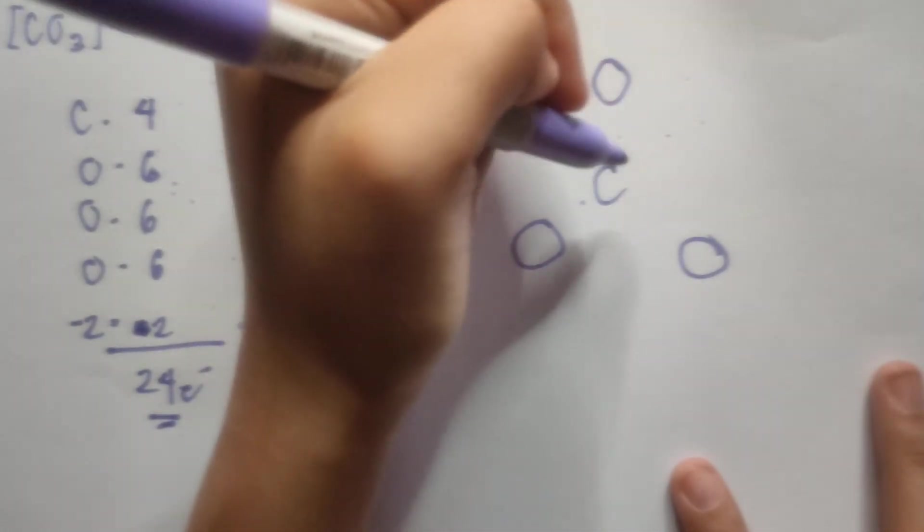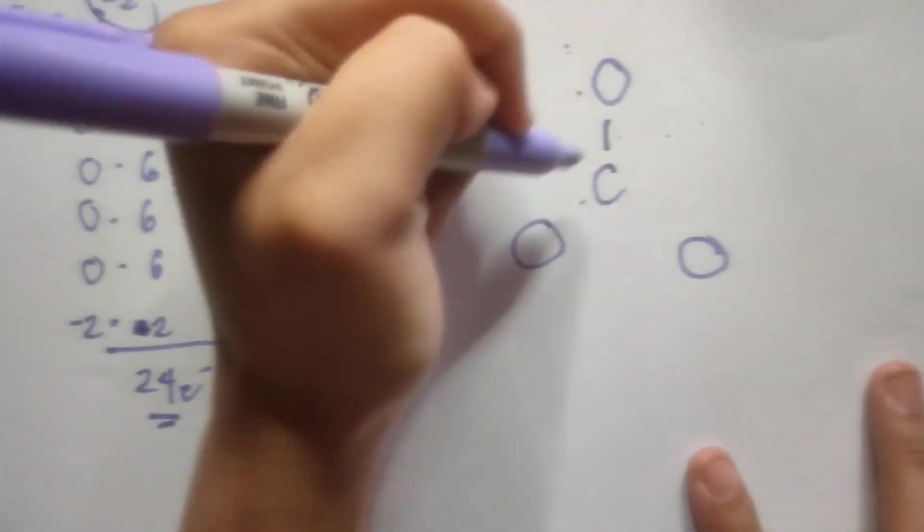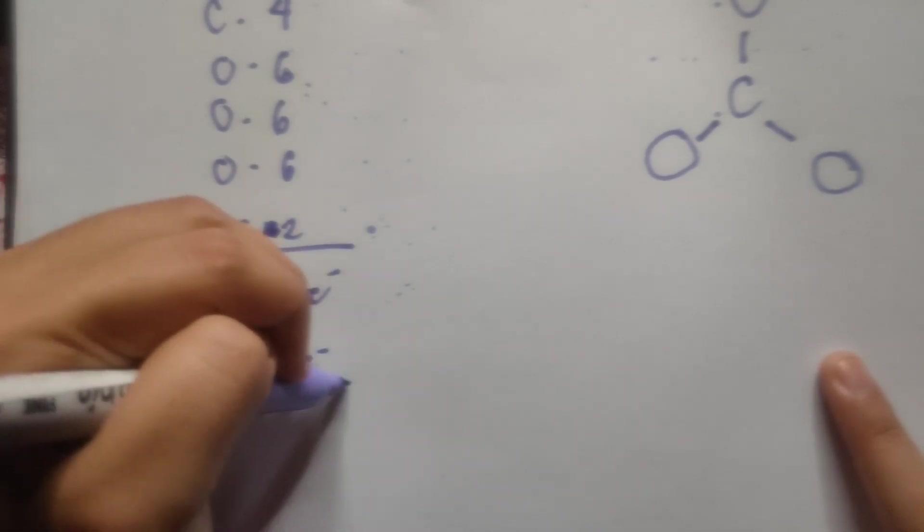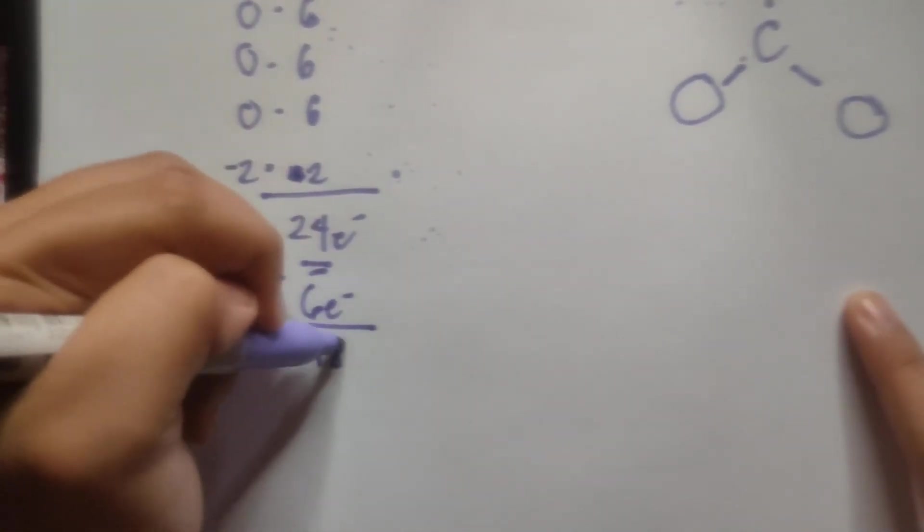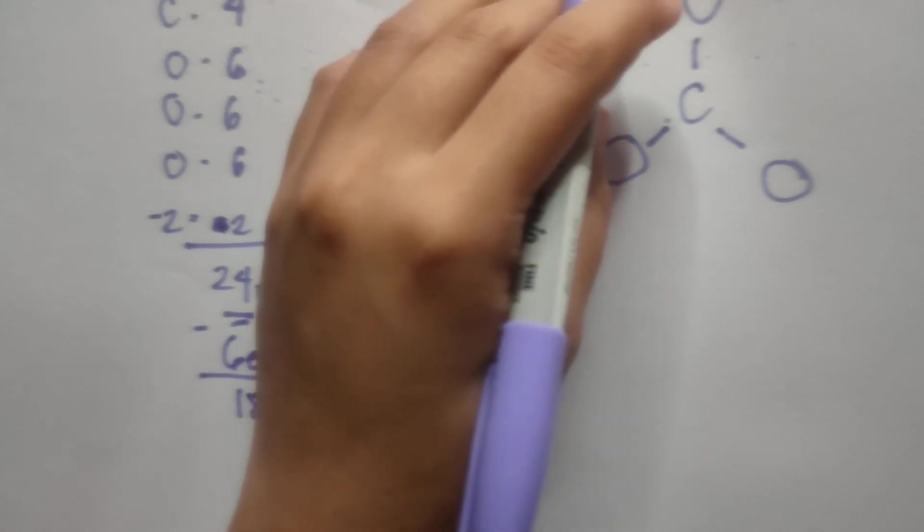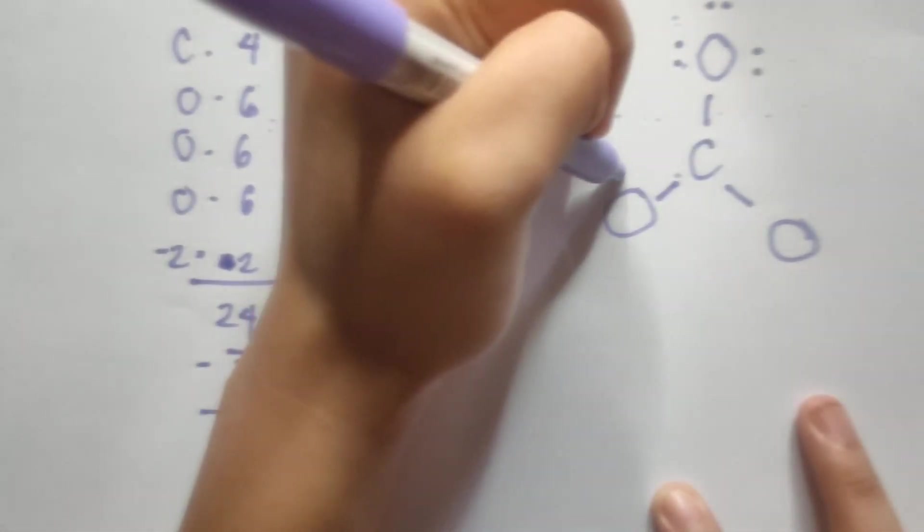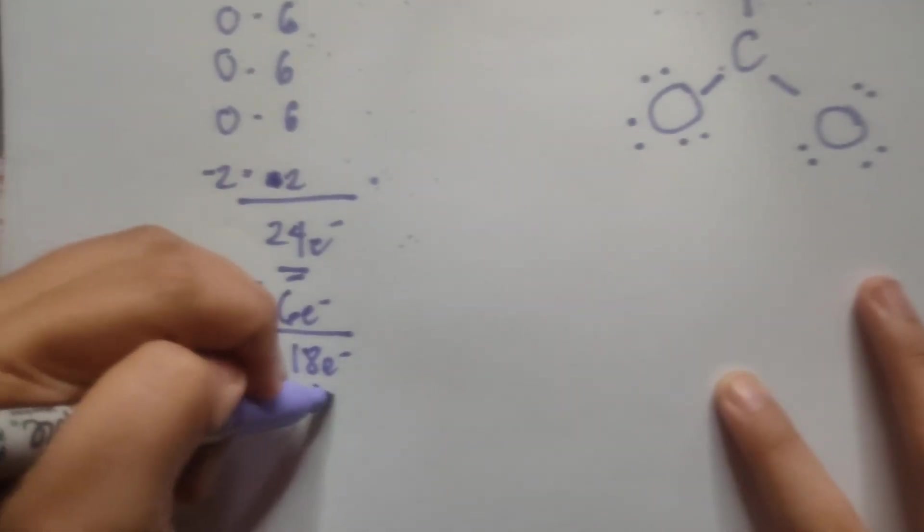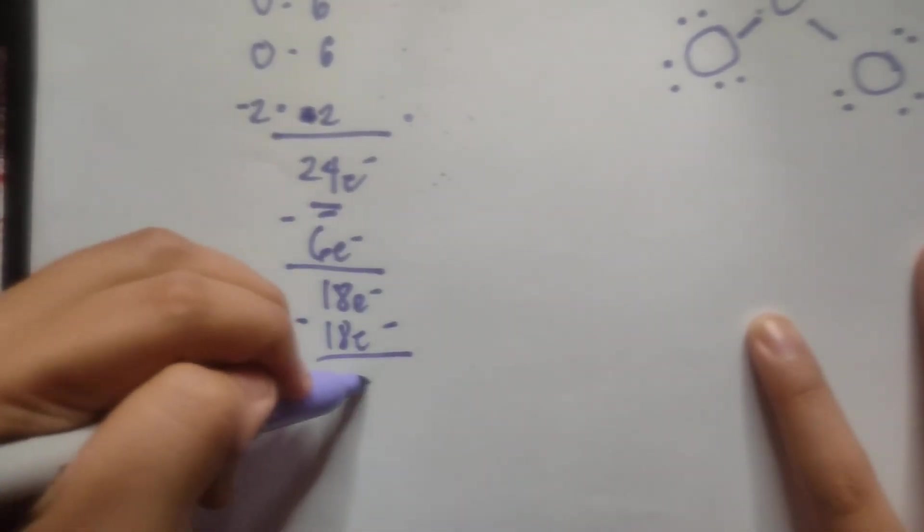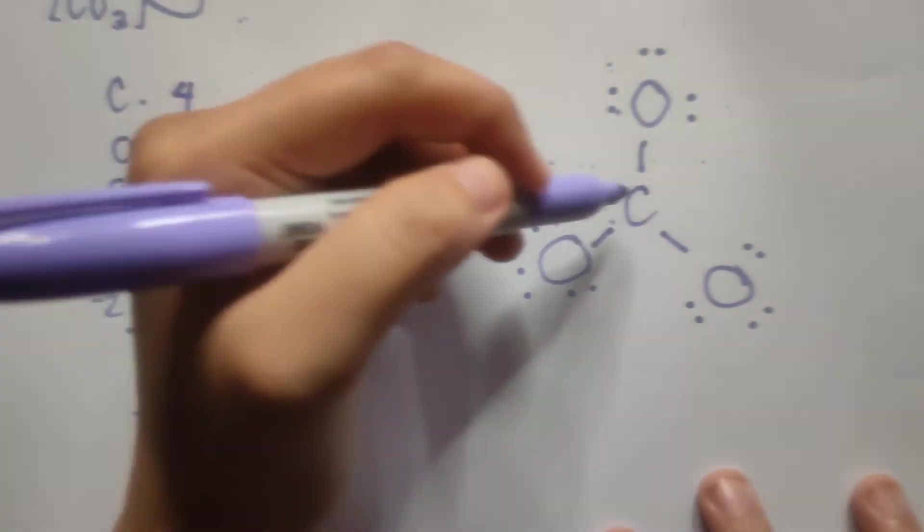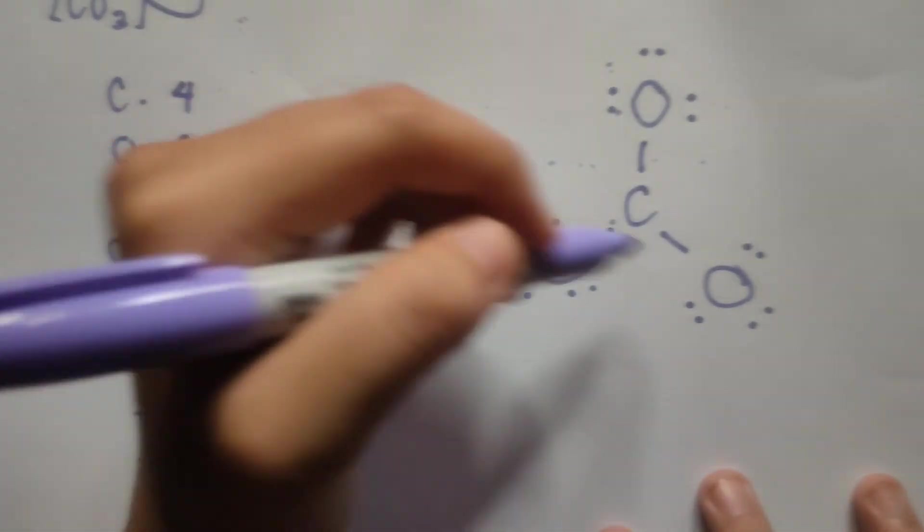So from here on, we can start to distribute the electrons. So I can first start with the bonds. One, two, three. So that's a total of three bonds. So we can subtract six electrons. So from there, we only have 18 electrons left. So we can now start to distribute the electrons around it. One, two, three, four, five, six, seven, eight, nine, 10, 11, 12, 13, 14, 15, 16, 17, 18. So I have successfully distributed the 18 electrons. So I have zero left. But if you would notice, carbon does not follow the octet rule, while all the other oxygens do.